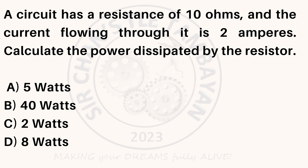A circuit has a resistance of 10 ohms and the current flowing through it is 2 amperes. Calculate the power dissipated by the resistor. A. 5 watts. B. 40 watts. C. 2 watts. D. 8 watts.